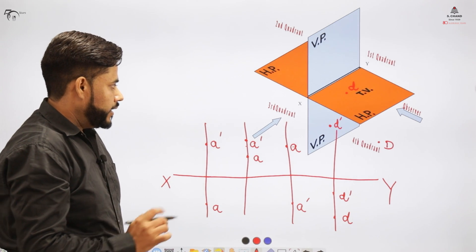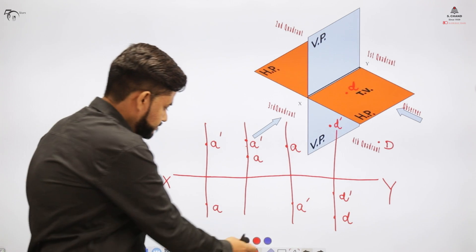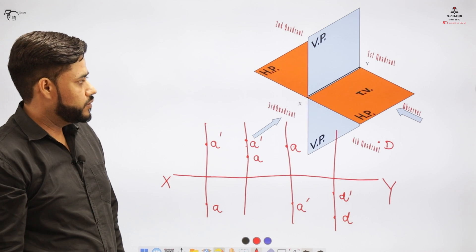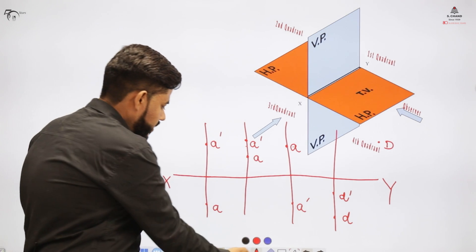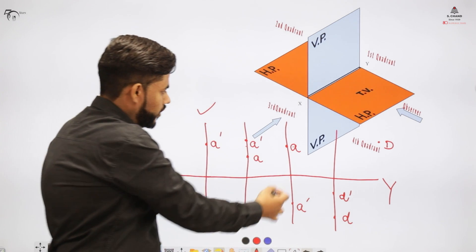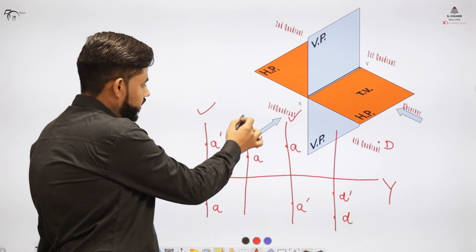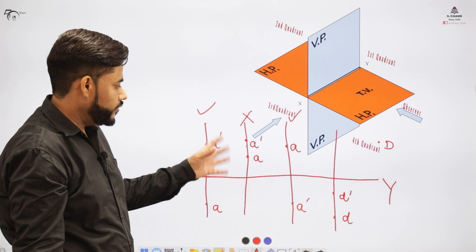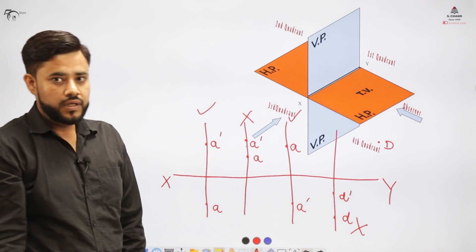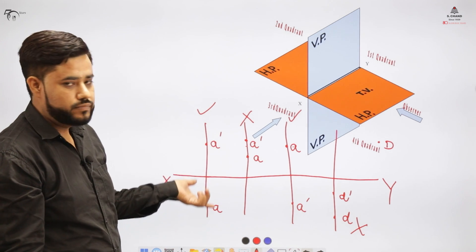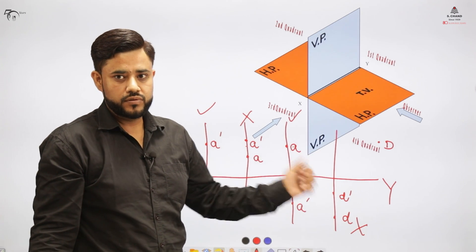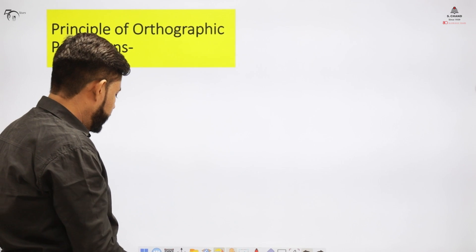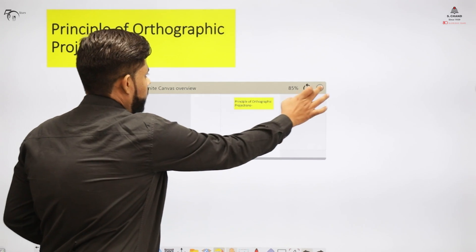A question to the audience: which quadrant would you prefer for placing the object? The obvious answer is either the first or the third quadrant. In the second quadrant, both views overlap, leading to confusion. The same problem occurs in the fourth quadrant. So technically, we avoid placing objects in the second and fourth quadrants and keep them in the first or third quadrant instead.